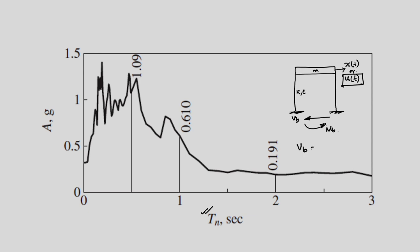What is the base shear V_B? This is nothing but the stiffness offered by the column times S_D. So this is the amount of base shear, and that is the reason the moment we have S_D, we can find out the base shear. We can also find out the moment, which is H — the height of the column — times V_B. That is the quantity we use for design, and that is the reason the response spectrum is so useful for designing a structure.